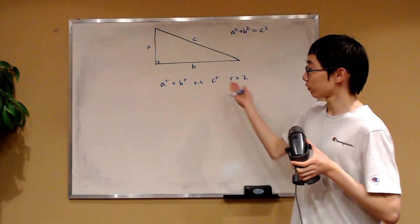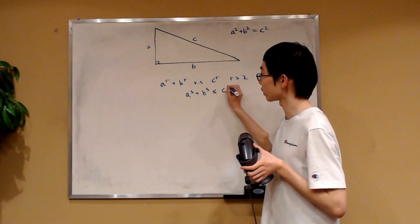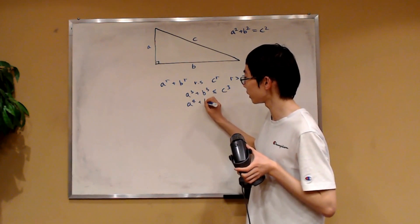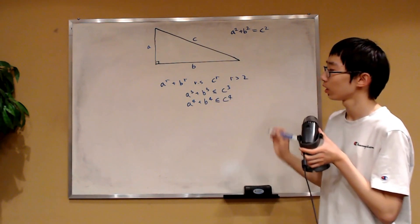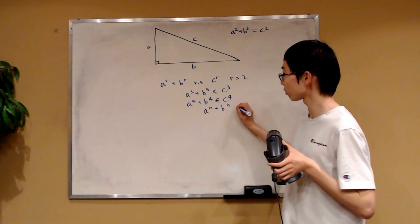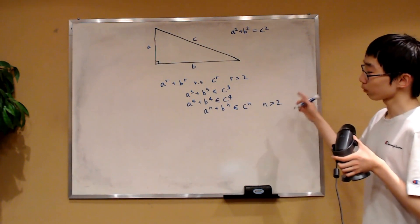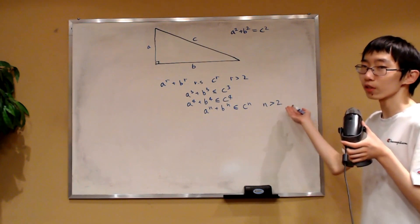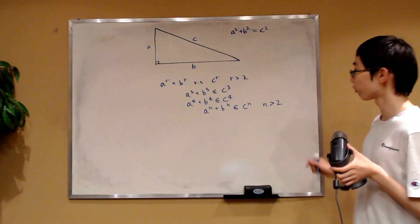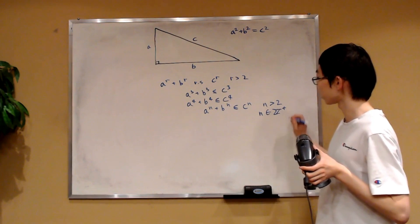He found the result for when r equals 3, and it turns out that a cubed plus b cubed is always smaller or equal to c cubed. Using a similar strategy, you can also show that a to the 4 plus b to the 4 is always smaller or equal to c to the 4. These two results might make us conjecture that a to the n plus b to the n is always smaller or equal to c to the n for n greater than 2. Right now, we only have data for positive integers, so we'll first consider the cases when n is a positive integer greater than 2.